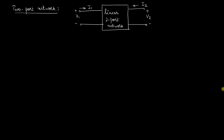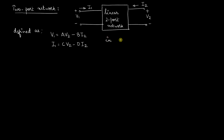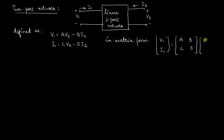We can define the two-port network using the transmission parameters as V1 = A·V2 − B·I2 and I1 = C·V2 − D·I2. In matrix form, this is [V1; I1] = [A, B; C, D] · [V2; −I2]. Remember, there is a negation sign corresponding to the output current leaving the network, that is minus I2.